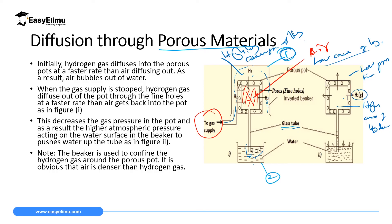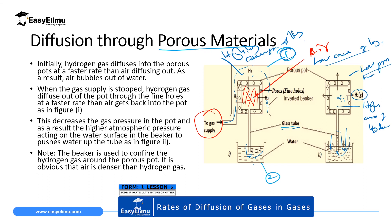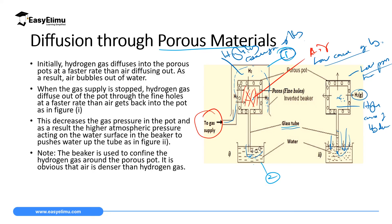Hydrogen now diffuses from inside to outside, leaving an empty low-pressure space inside the porous material. Atmospheric pressure in the lower beaker pushes the water up through the delivery tube to occupy the space left by the diffusing hydrogen. So when we see the water level rising along the glass tube, it means hydrogen is diffusing from inside to outside. In the first case, water moved out of the tube and bubbles appeared, meaning hydrogen was diffusing from outside to inside.